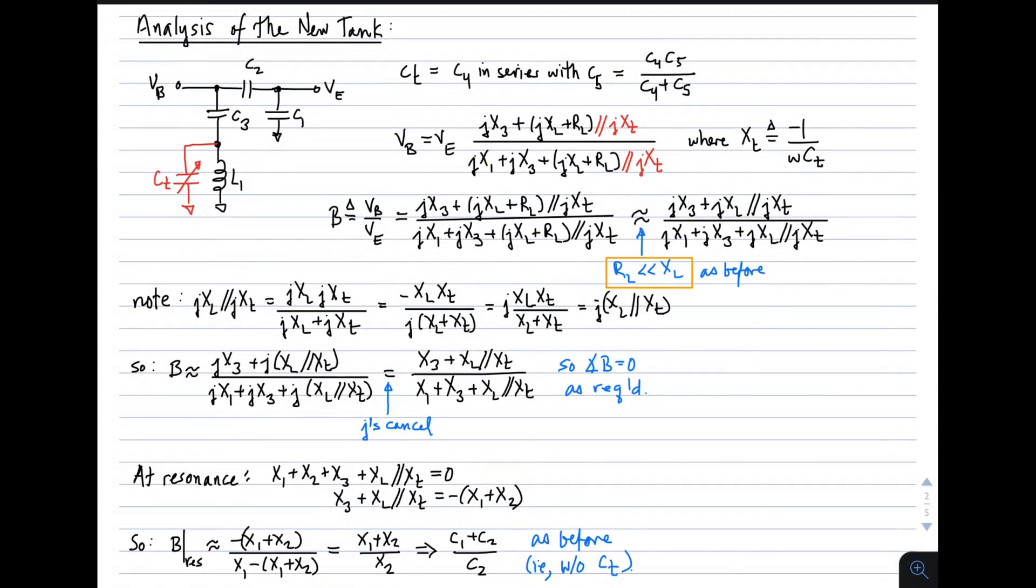So the analysis of this thing is pretty straightforward. It looks more complicated, but it's really just a small variation to the original analysis. The new tank is the same as the old tank, except now we have this variable capacitance in parallel with the inductor. I'll call it C sub T for convenience. C sub T is simply C4, that bias blocking capacitor, in series with C5, which is the varactor diode. Of course, you put those in series, that's the value of C sub T.